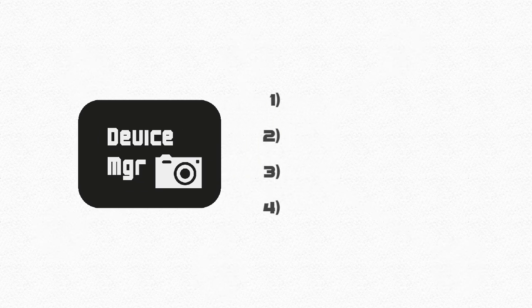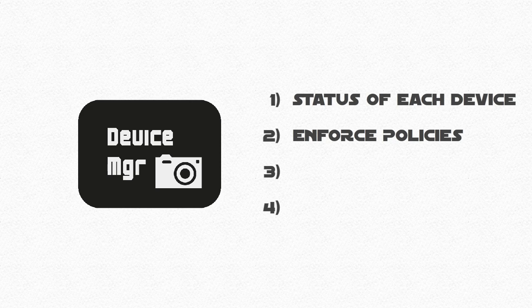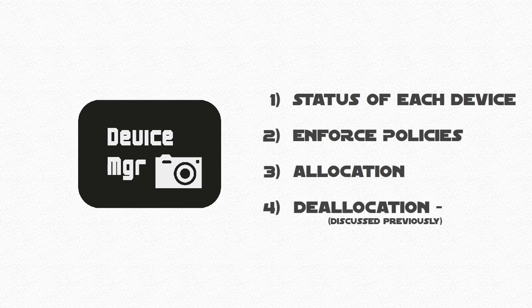First, it has to monitor the status of each device. Second, enforce policies to determine which process will get a device and how long for. Third, allocation. And fourth, deallocation — something we discussed previously.